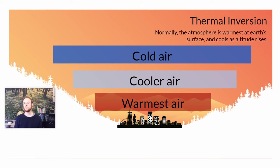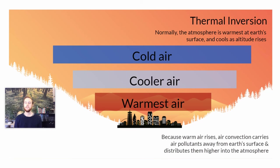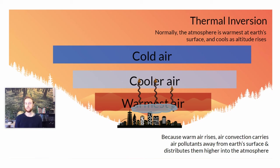This normal temperature gradient helps disperse air pollutants. Because warm air rises, pollutants that form near Earth — things like tropospheric ozone, smog, or particulate matter — get carried upward by convection currents. Think back to the Hadley cell from topic 4.5, where warm air rises at the equator. This is beneficial from a pollution standpoint because it helps carry those air pollutants up and away from our urban areas.